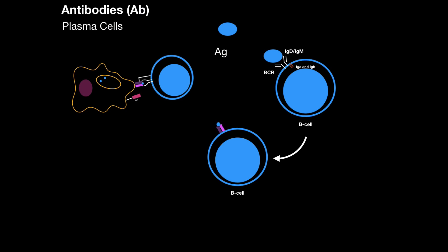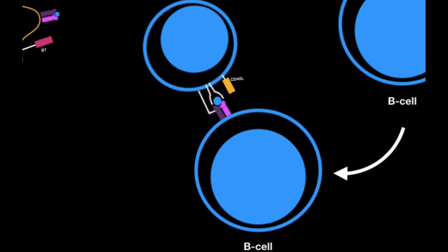Now, after the T helper cells get active, it expresses something called CD40 ligand, which will bind to CD40 on the active B cell. So when a B cell gets activated after it binds to an antigen, it starts expressing CD40. CD40, CD40 ligand, those two, when they're connected, those are very important coreceptors that help the B cell differentiate.